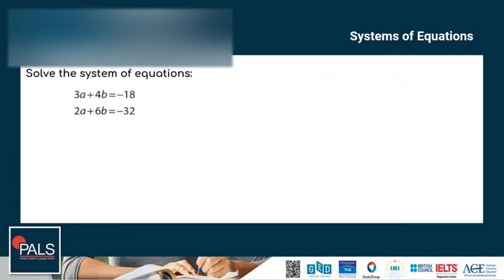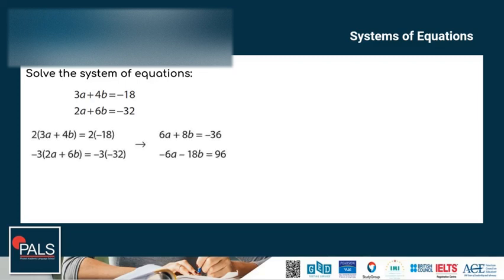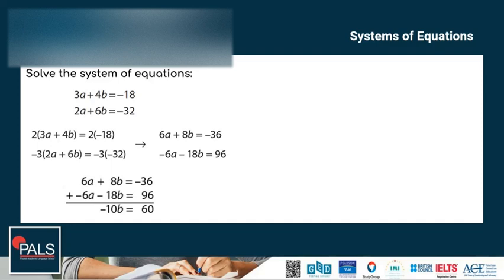Let's try another example. Equation 1: 2a plus 4b is equal to 18. Equation 2: 2a plus 6b is equal to negative 32. Since I want to cancel out a first, I'm going to multiply 2 by the first equation and negative 3 by the second equation. That gives new equations: 6a plus 8b is equal to negative 36, and negative 6a minus 18b is equal to 96. Adding the two equations, 6a and negative 6a cancel out, giving me negative 10b is equal to 60.